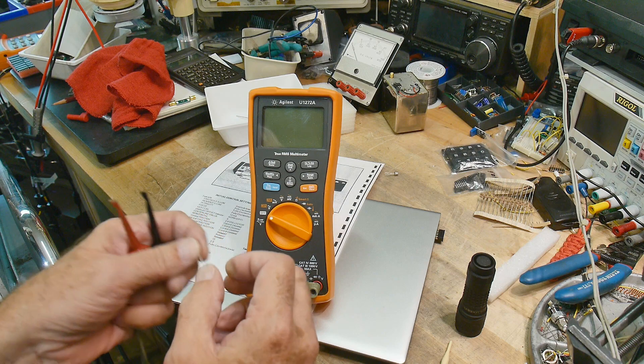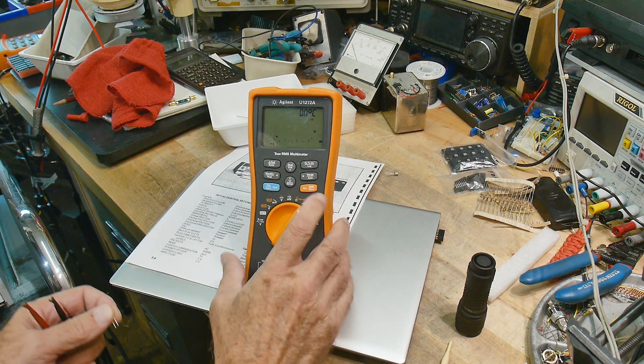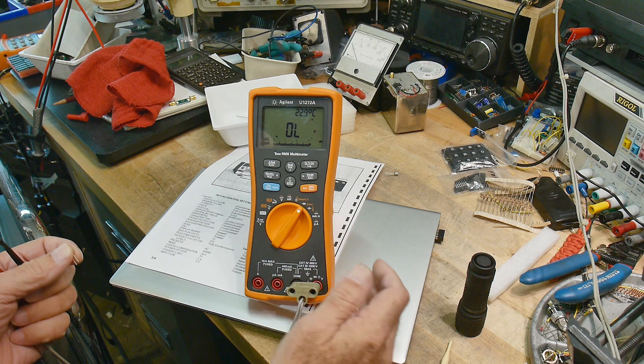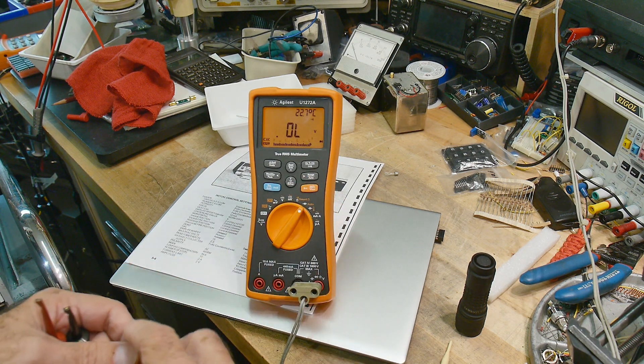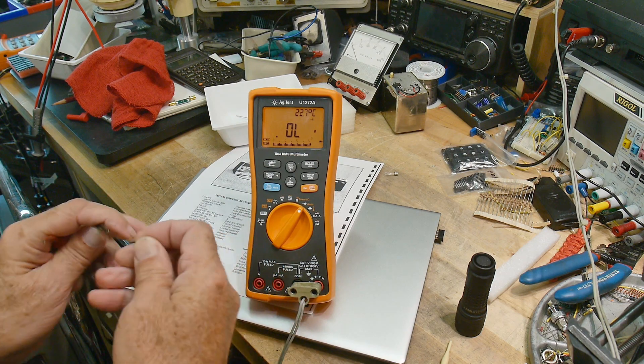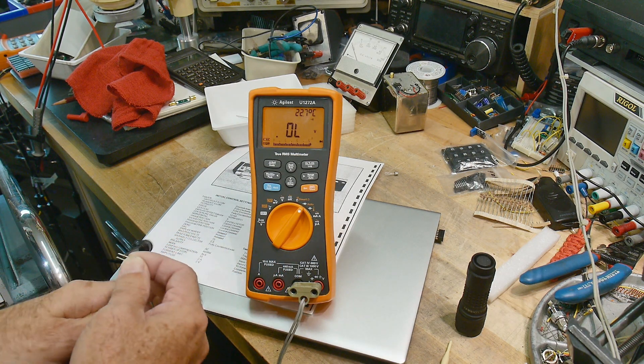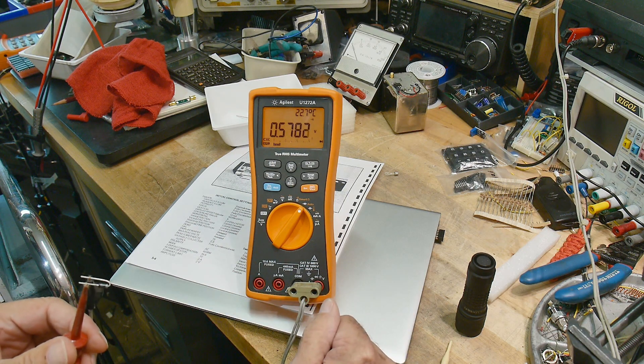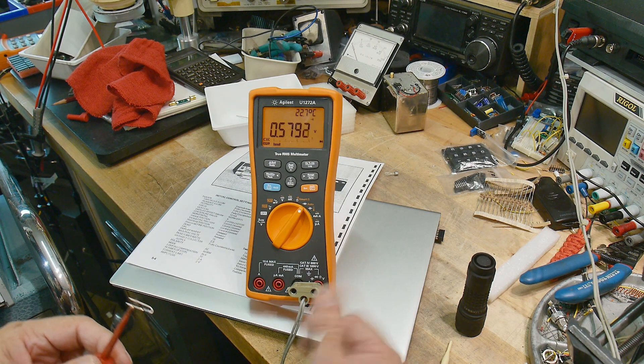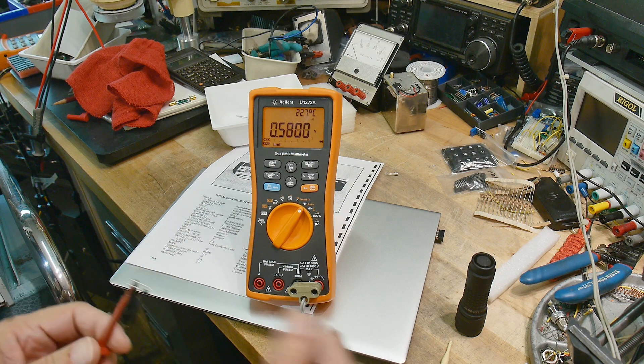We'll do a diode check on it with our meter. Let's turn on the backlight so we can see it better.